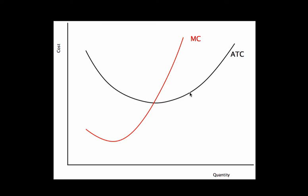In the long run, maybe I want to change this fixed input — expand my factory, contract it, whatever. So I want to move to a different ATC curve, meaning a different size factory. Remember, what makes up this curve is that we have fixed costs, which gives us average fixed costs, plus our variable costs, which gives us average total cost. So for a larger factory, we might have a larger fixed cost, but obviously there are cases where it might make sense to have a larger factory.